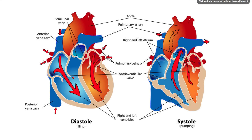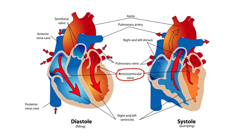We have the right ventricle, left ventricle, right atrium, and left atrium. The next thing I want to point out is that between the atria and the ventricles, we have what we call the atrioventricular valve — and that makes sense since it's between the atria and the ventricle. So here we have an atrioventricular valve, and here we have an atrioventricular valve.